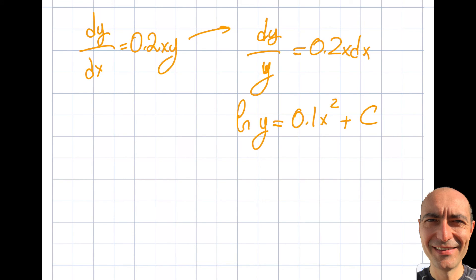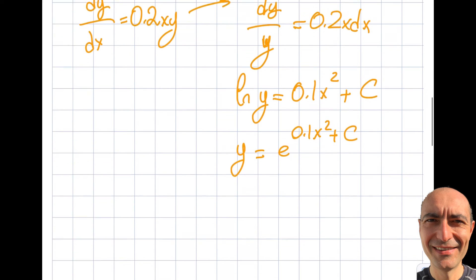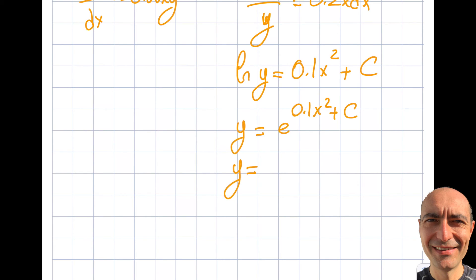Then I apply e to the power of both sides: e^(ln y) gives y, and the right side gives e^(0.1x² + c). As discussed in module one, this simplifies to y = De^(0.1x²), which is the general solution. To get the particular solution, I need an initial condition to find D. The reason I'm solving a case that has a solution is I want to compare it to the direction field — let's pretend there's no solution and draw the slope field.